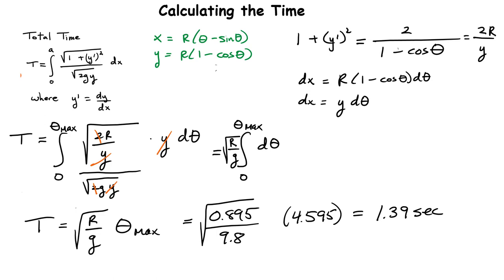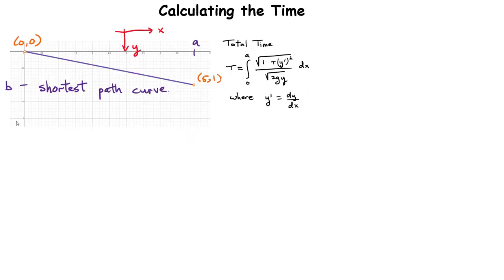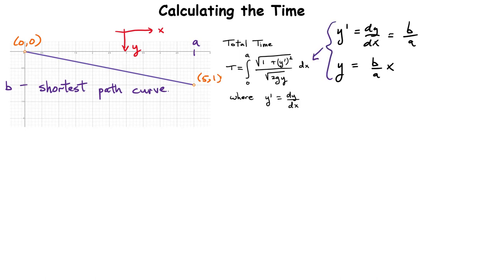For our second curve — the straight line, the shortest path between the two endpoints — we can use our time expression. The slope y' = dy/dx = b/a (rise over run), which is constant. Since y is a linear function of x, y = (b/a)x. Substituting into the time integral: T = ∫ from 0 to a of sqrt(1 + (b/a)²) / sqrt(2g · (b/a)x) dx.